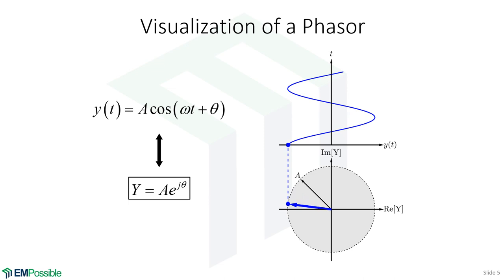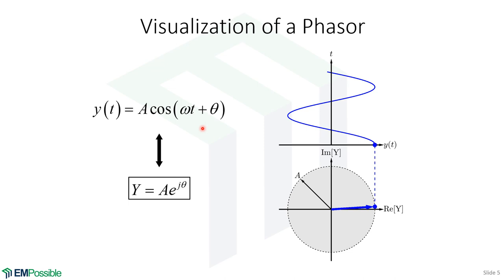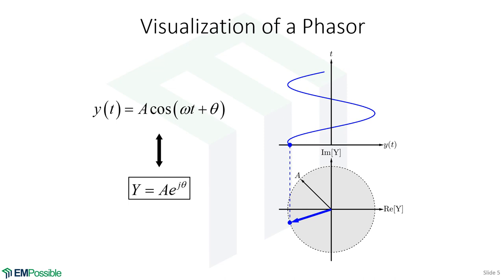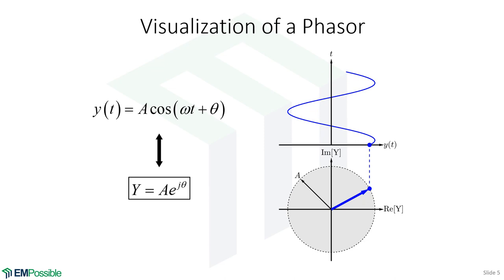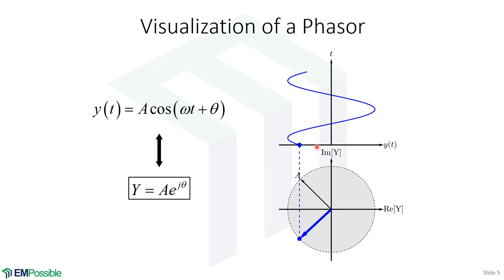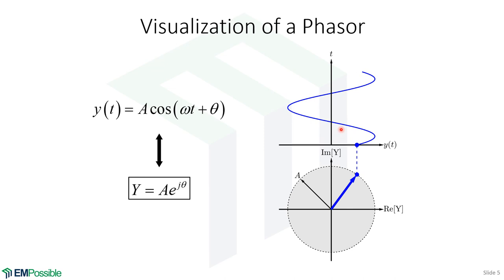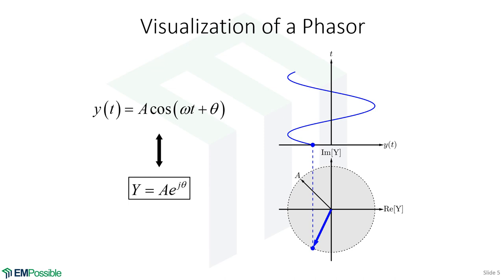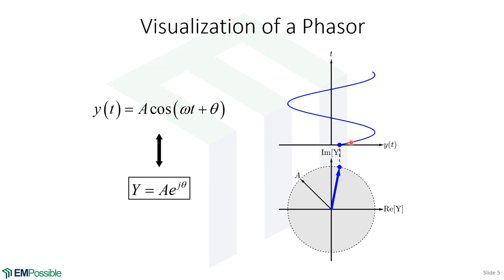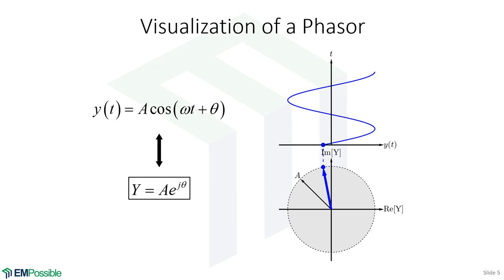Here is the classic way to visualize what a phasor is representing. On the left I've written our original function and how we write it in phasor form. The animation on the right at the top shows our original function y(t) plotted as a function of time, oscillating harmonically — y(t) is really just wiggling back and forth along this axis, and tracking previous values gives us what looks like a wave. This blue dot on the axis is the only thing that physically exists.